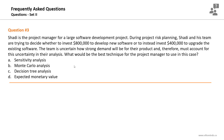Question number three. Shadi is the project manager for a large software development project. During project risk planning, Shadi and his team are trying to decide whether to invest $800,000 USD to develop new software or instead invest $400,000 USD to upgrade the existing software. The team is uncertain how strong demand will be for their product and therefore must account for this uncertainty in their analysis. What would be the best technique for the project manager to use in this case?